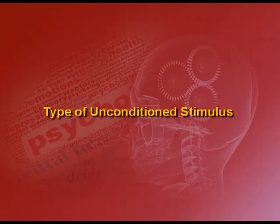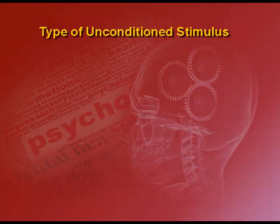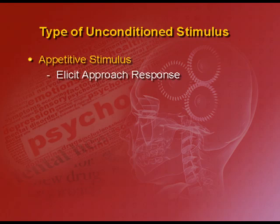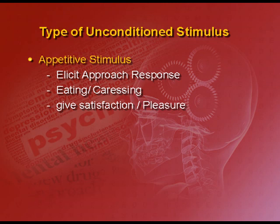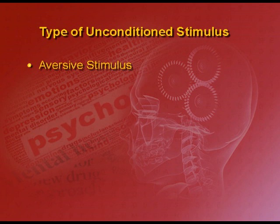Let us now come to the types of unconditioned stimuli. What kinds of US can be used for classical conditioning? There are basically two types. The first is appetitive unconditioned stimuli, which elicit approach responses — for example, eating, caressing, getting praiseworthy words, being appreciated for your work. They give satisfaction and result in pleasure. Learning when appetitive unconditioned stimulus is used is usually slower.